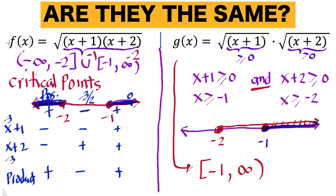The domain of f is (-∞, -2] ∪ [-1, +∞), whereas the domain of g is [-1, +∞). So are these two functions the same? Based on their domains, these two functions are not the same. Thank you very much — this is Land the Assistant, and I hope to see you again on our next video. Bye for now.